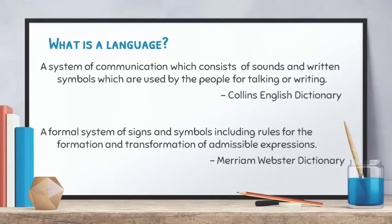According to Merriam-Webster Dictionary, language is a formal system of signs and symbols including rules for the formation and transformation of admissible expressions. This time it becomes a formal system of signs and symbols including grammatical rules, syntaxes, and pronunciation rules — governing how we convey our thoughts and ideas. Currently we are using the English alphabet when writing letters, compositions, or stories.